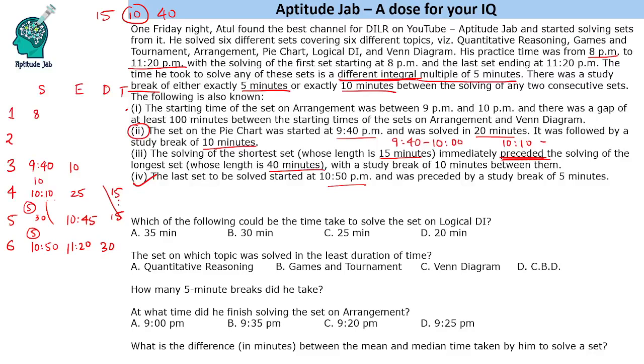You must eliminate it at the first go itself not making this case. So it is clear that pie chart will start at 9:40 and end at 10:00. So the duration is of 20 minutes. The topic is pie chart and the next starts at 10:10 goes on till 10:45. Duration of 35. And this is a gap of 10 minutes. Now we have to fill these information.